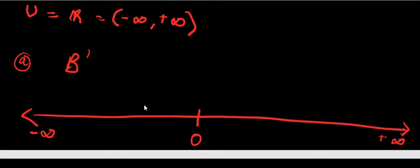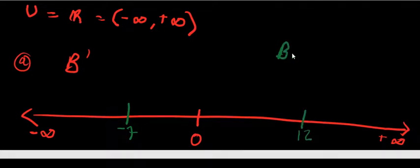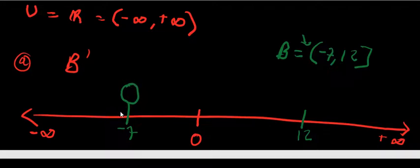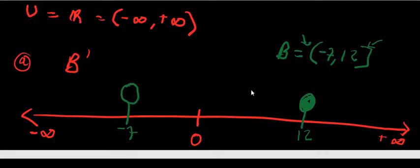We are going to illustrate set B on this number line. Set B goes from negative 7 to positive 12, written as open bracket negative 7 comma 12 close block bracket. We know that an open bracket means we use an unshaded circle to show the number is not part of the set, and a block bracket means we use a shaded circle.